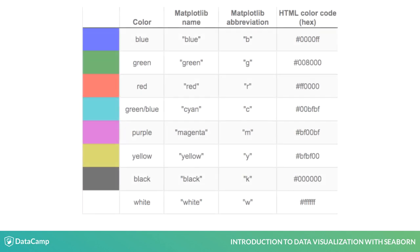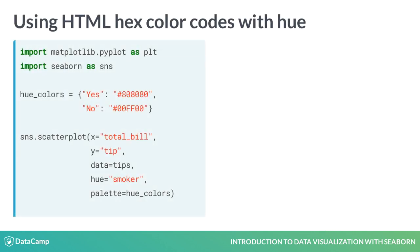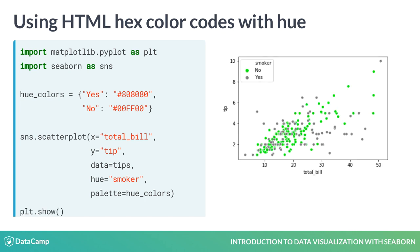In the last example, we used the words black and red to define what the hue colors should be. This only works for a small set of color names that are defined by matplotlib. Here is the list of matplotlib colors and their names. Note that you can use a single letter matplotlib abbreviation instead of the full name. You can also use an HTML color hex code instead of the matplotlib color names, which allows you to choose any color you want. Here is an example using HTML hex codes. Make sure you put the hex codes in quotes with a pound sign at the beginning.